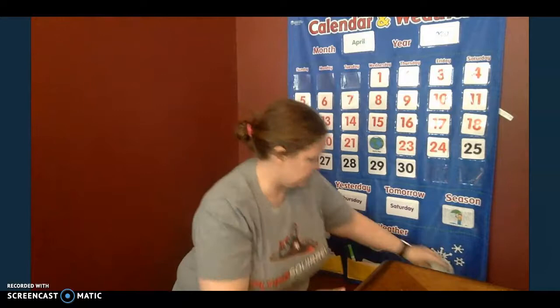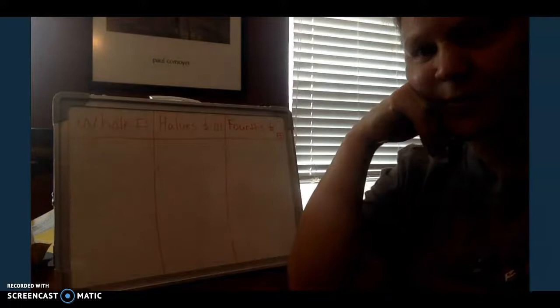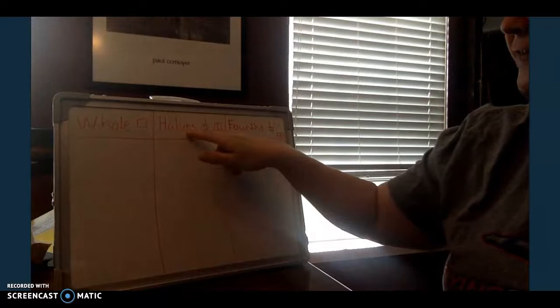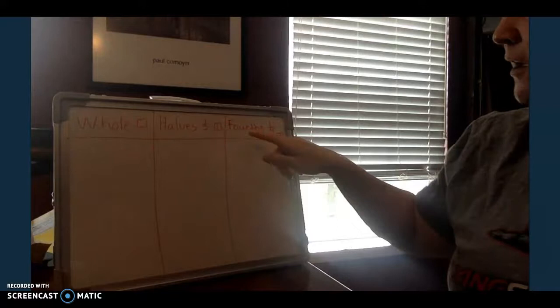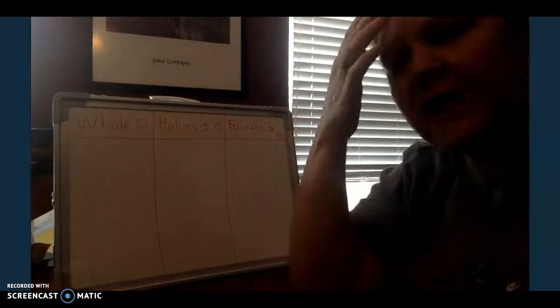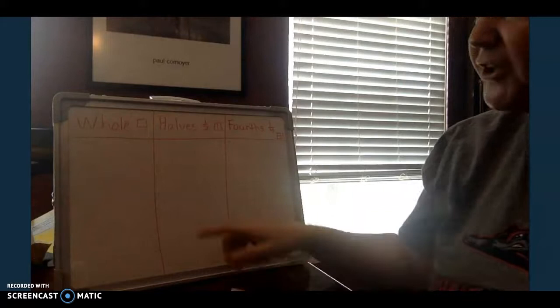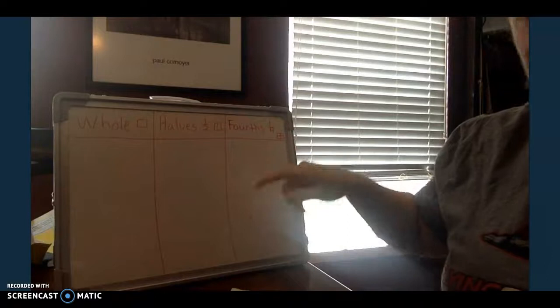Today is going to be our last day on fractions. So we're going to start by looking at my board. I've got three parts to my board right now. I've got whole — it's a whole thing. Halves — two parts, one out of two, the square has two parts broken into it. And fourths — one fourth, four equal parts. Remember, we're talking about equal parts. I'm going to hold up a picture and you're going to help me figure out if it goes under whole, halves, or fourths.